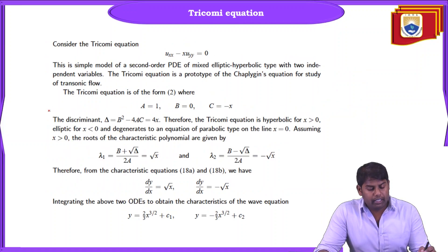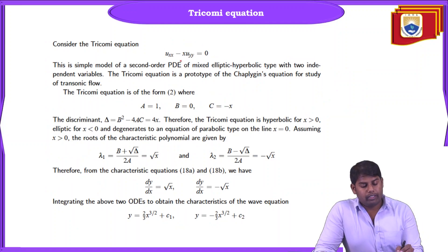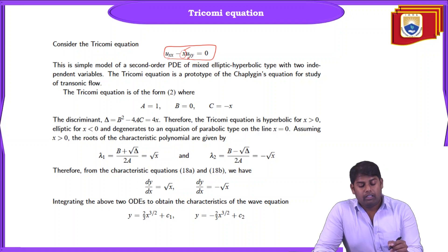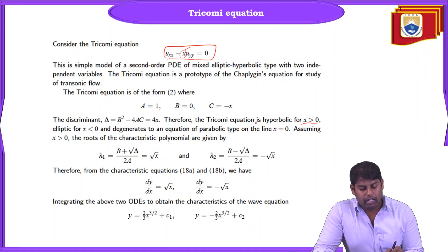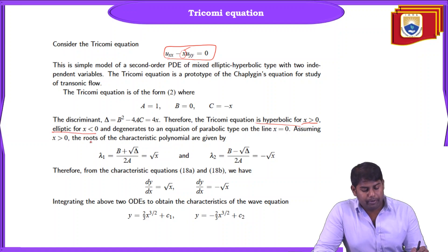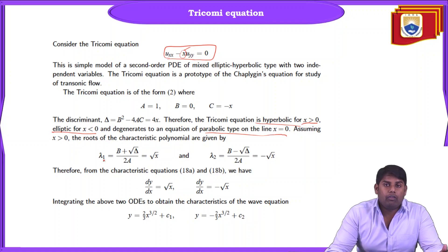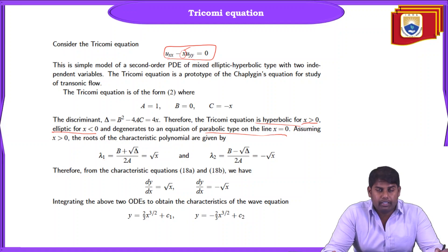The Tricomi equation is one where the equation behavior changes based on the value of x — it acts like a switching factor. If x > 0, we have hyperbolic behavior; if x < 0, we have elliptic; and if x = 0, we have parabolic.